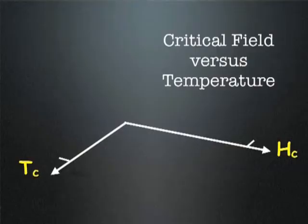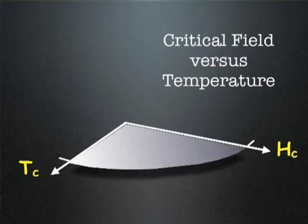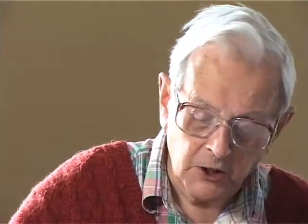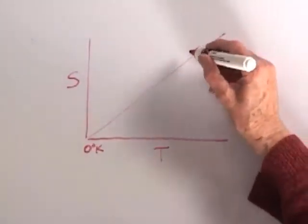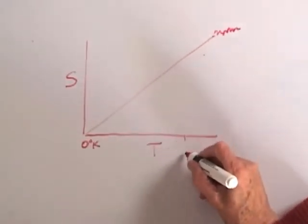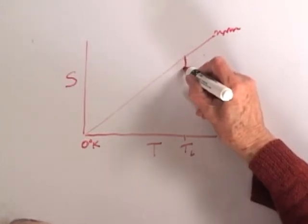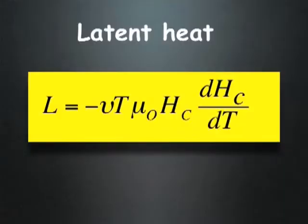What they hadn't expected to find later was that if you have a magnetic field present, the transition occurs at a lower temperature, and also it occurs abruptly with a latent heat. The entropy of a metal is proportional to the absolute temperature. At the transition Tc, without a field, nothing happens to the entropy at that point — it simply starts to fall. There's no change in entropy and no latent heat. Latent heat is a measure of the change of entropy at a transition.